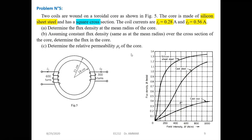Coils are wound on a toroidal cord as shown in Figure 5. The cord is made of silicon sheet steel — that is the material we are using. This magnetizing core of silicon sheet has a square cross section, just like the previous case where we have a square cross section.